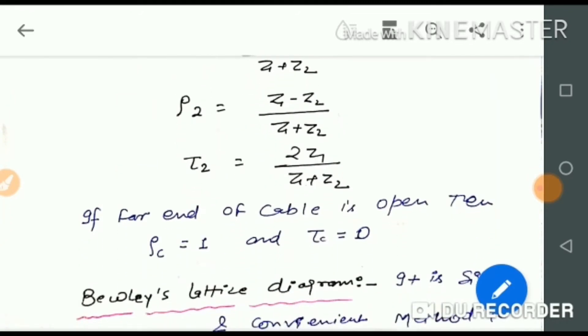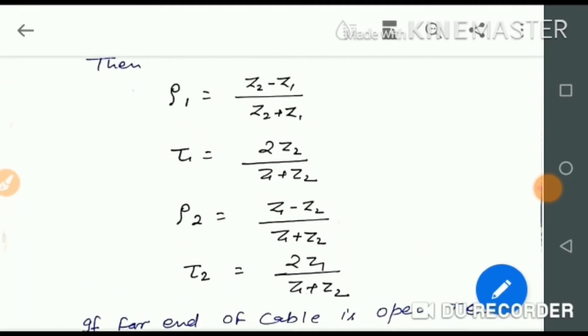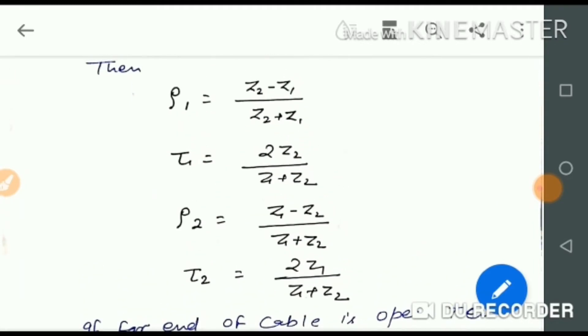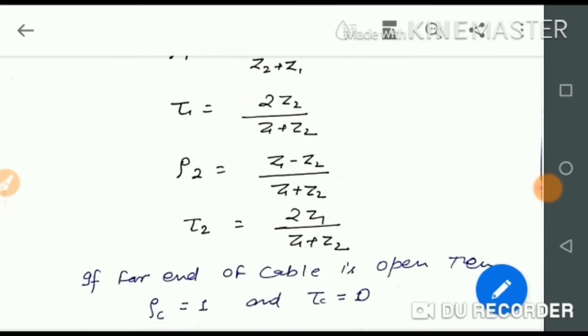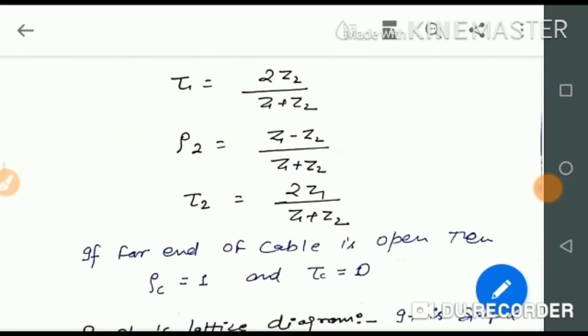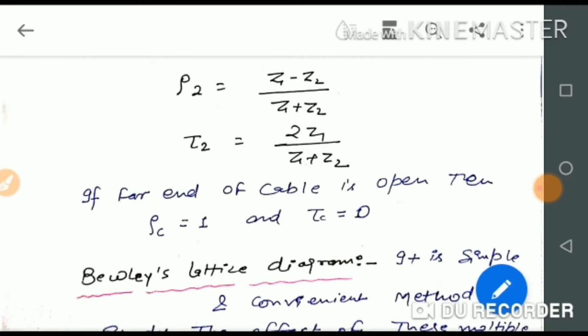We derive these formulas, which we have discussed in previous videos covering open circuit line, short circuit line, lossy state, and lossless state. If the end of the cable is open, then ρc is equal to 1 and τc is equal to 0.